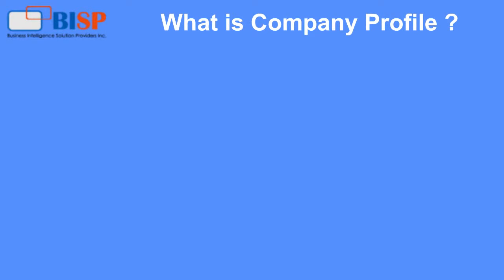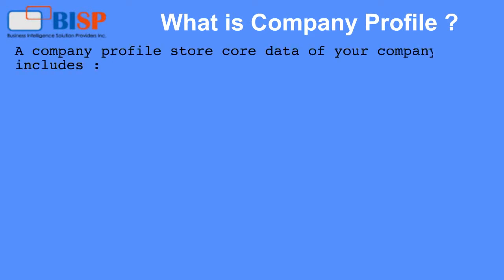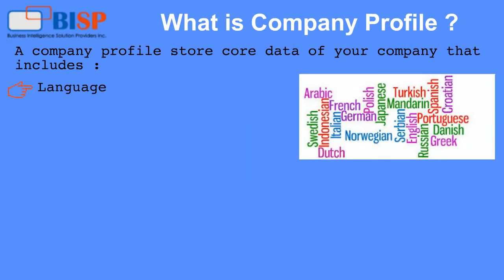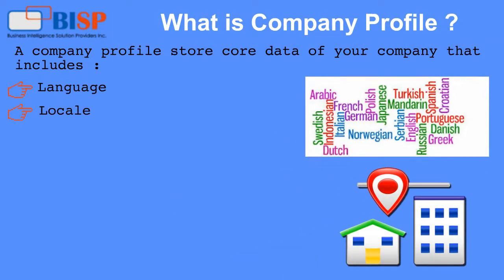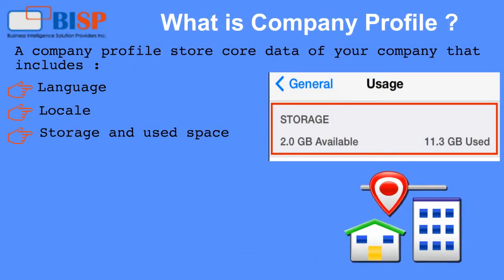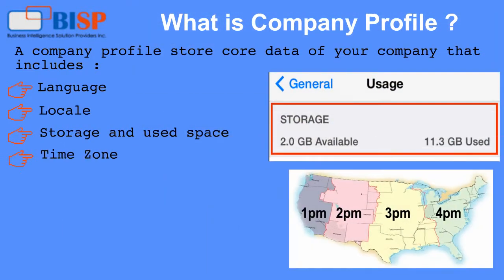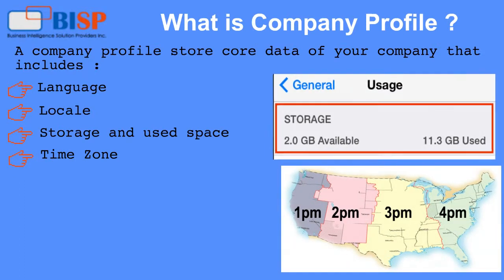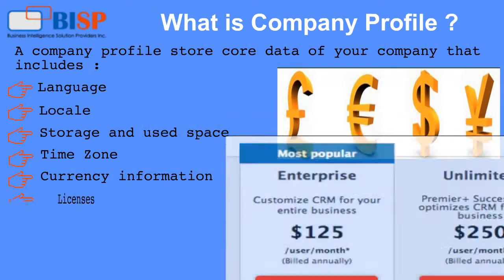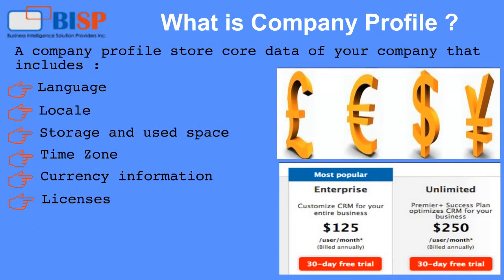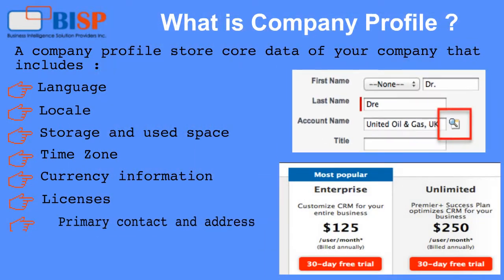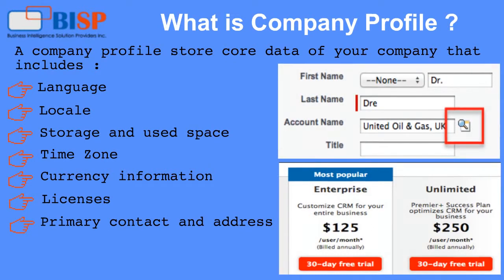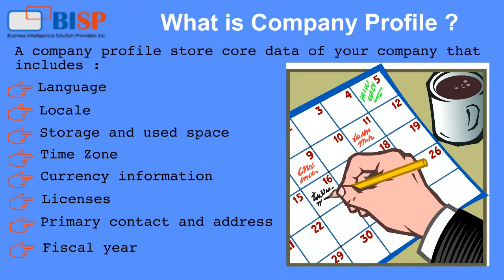What is company profile? A company profile stores core data of your company that includes Language, Locale, Storage and used space, Time zone, Currency information, Licenses, Primary contact and address, and Fiscal year.